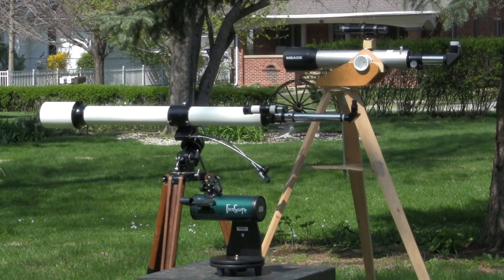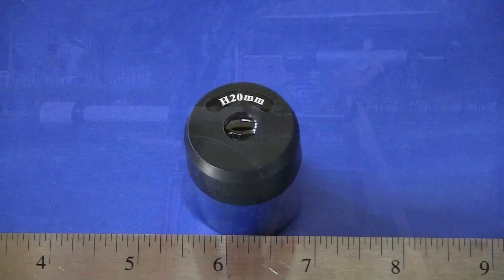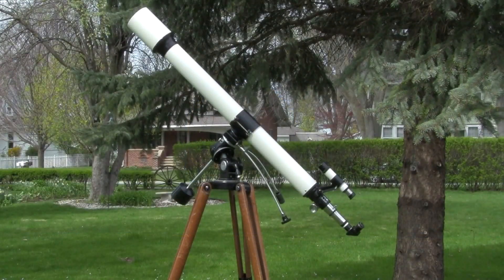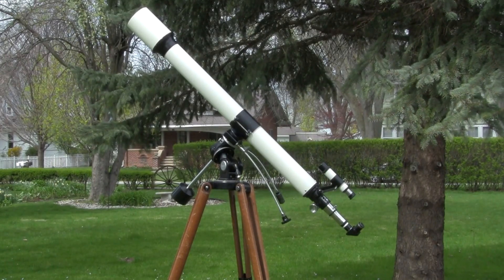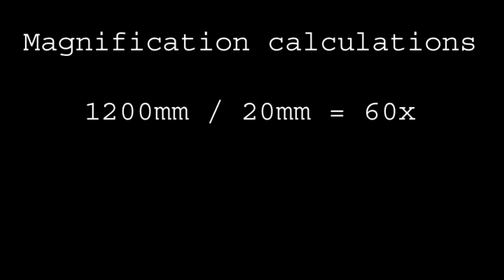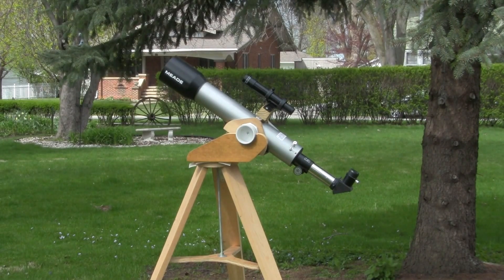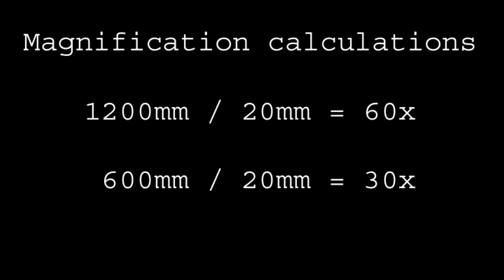So for example, let's take our three telescopes and look at each, assuming a 20mm focal length eyepiece. This 76mm refractor has a 1200mm focal length, so if we divide that by a 20mm eyepiece, the magnification is 60 times. For our shorter refractor, its focal length is about 600mm, so dividing that by 20mm eyepiece, we get 30 times.